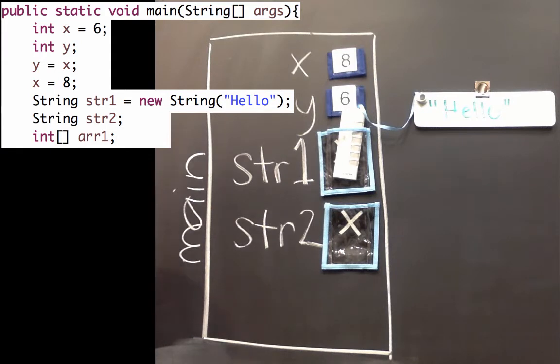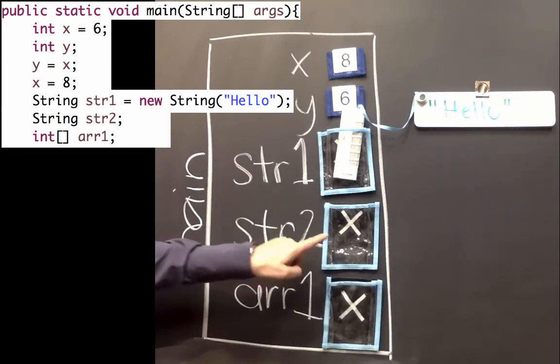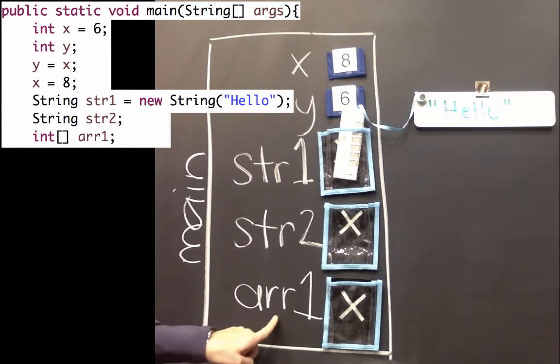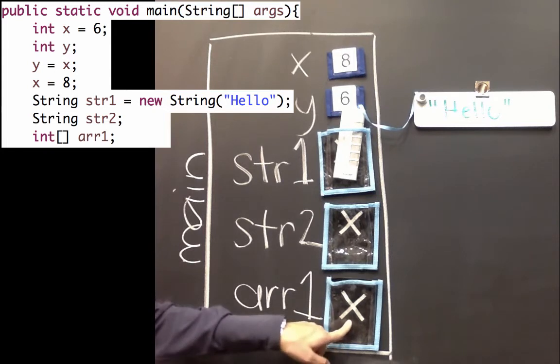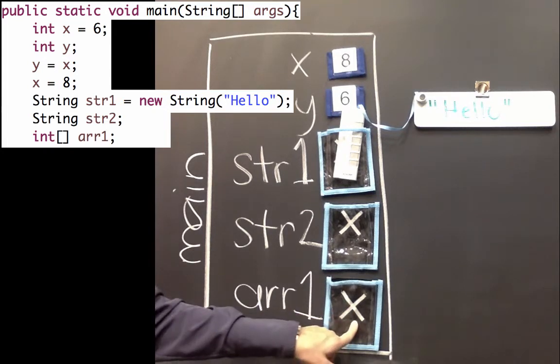We can see another example when we create a reference that could reference an int array. So just like the string, since we didn't give arr1 or array1 a value, we just put a semicolon, and we didn't have a get statement, its default is null.